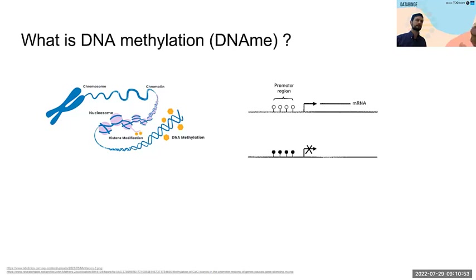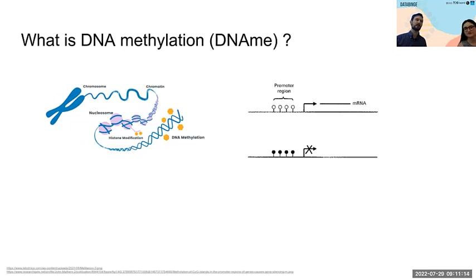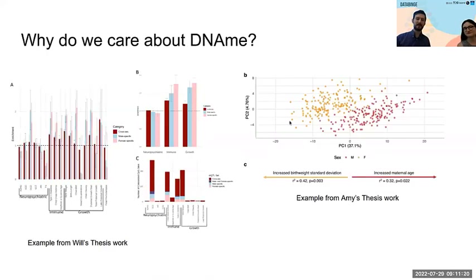DNA methylation is also quite a stable mark. If you have tissues collected and sitting in the freezer for years — they've checked up to 72 months at room temperature — DNA methylation is still stable, whereas RNA wouldn't be for looking at gene expression patterns. You can think of DNA methylation as kind of like a physical barrier added onto DNA that will prevent or attract other things to DNA.